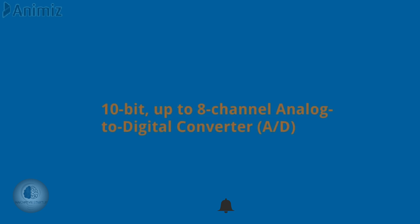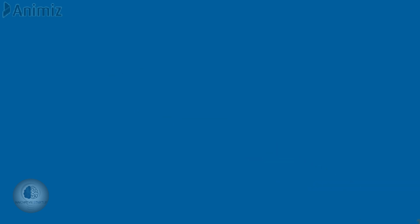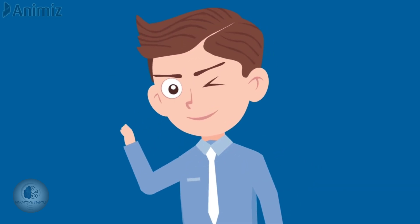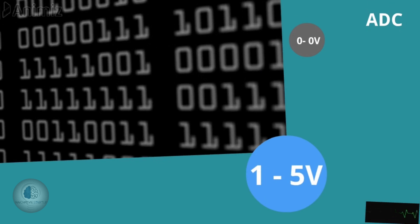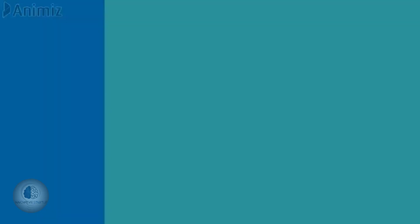There is a 10-bit ADC with 8 channels. This ADC performs analog-to-digital conversion. So if you have a voltage input or output, we use the digital format.